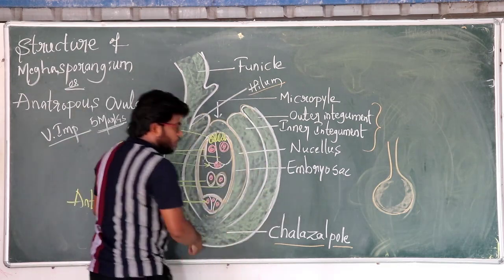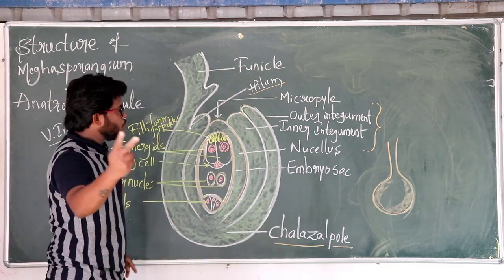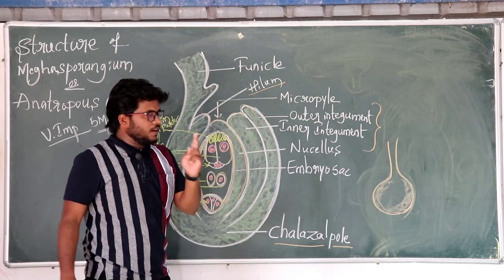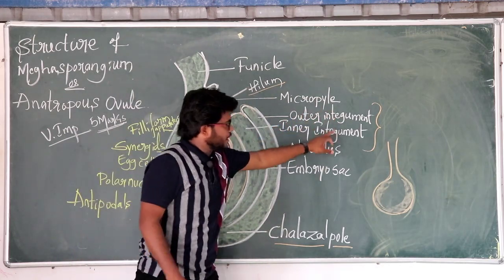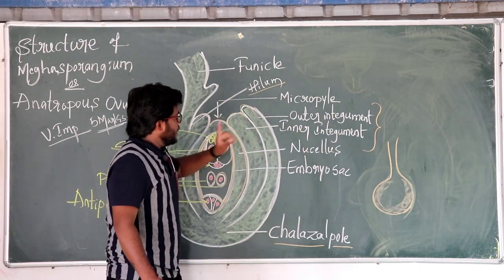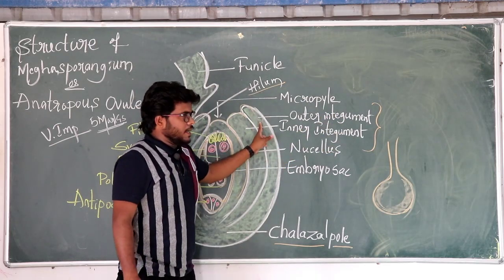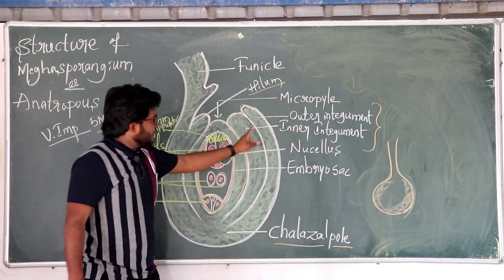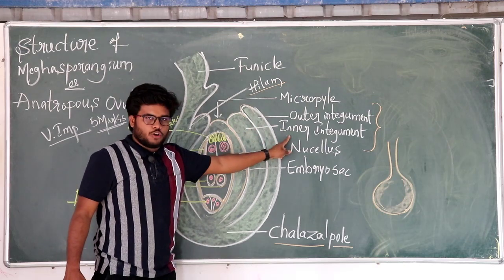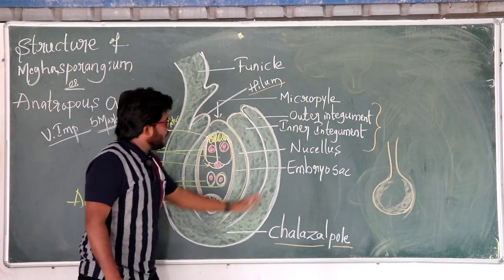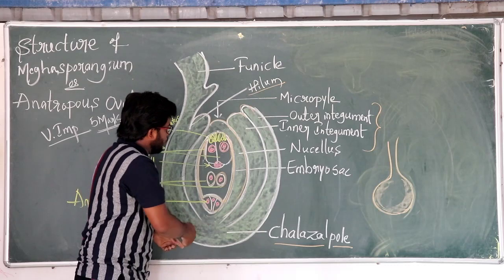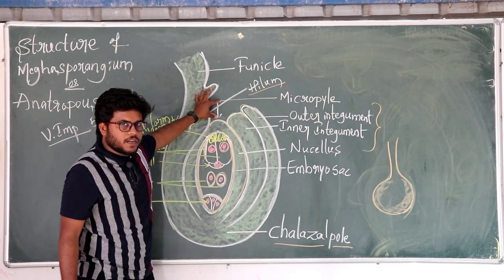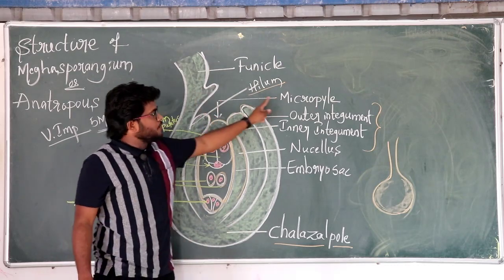The entire Ovule is surrounded by two types of layers called as the integuments. The outer layer is called as outer integument and inner layer is called as inner integument. These two integuments surround the entire Ovule except at some region and that forms the micropyle.